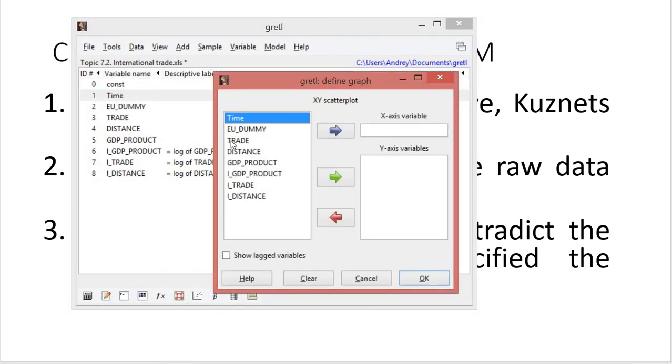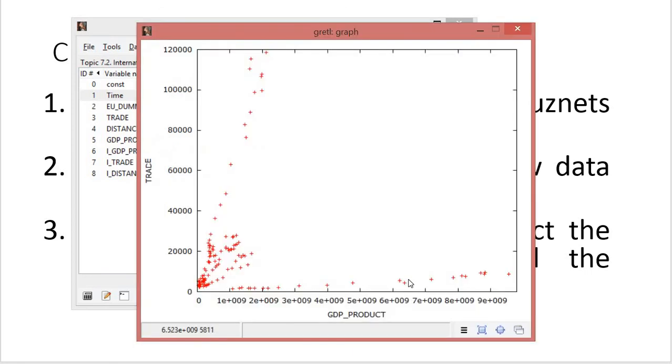And by the way, using this command, you can run a regression model with one independent variable and make some initial analysis. So first, I analyze how trade depends on GDP product. Actually, based on this, you cannot notice any relationship between trade and GDP product. Of course, it appears later when you run the regression model. But based on this graph, there is no relationship.